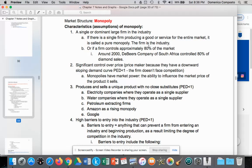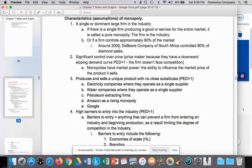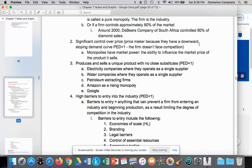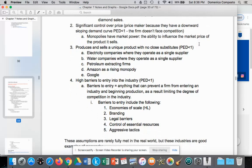You could have a remaining 20% controlled by smaller firms, but you have one dominant firm that has about 80% of the market share. An example of that: around 2000, De Beers company of South Africa controlled about 80% of diamond sales, so effectively it is a monopoly.